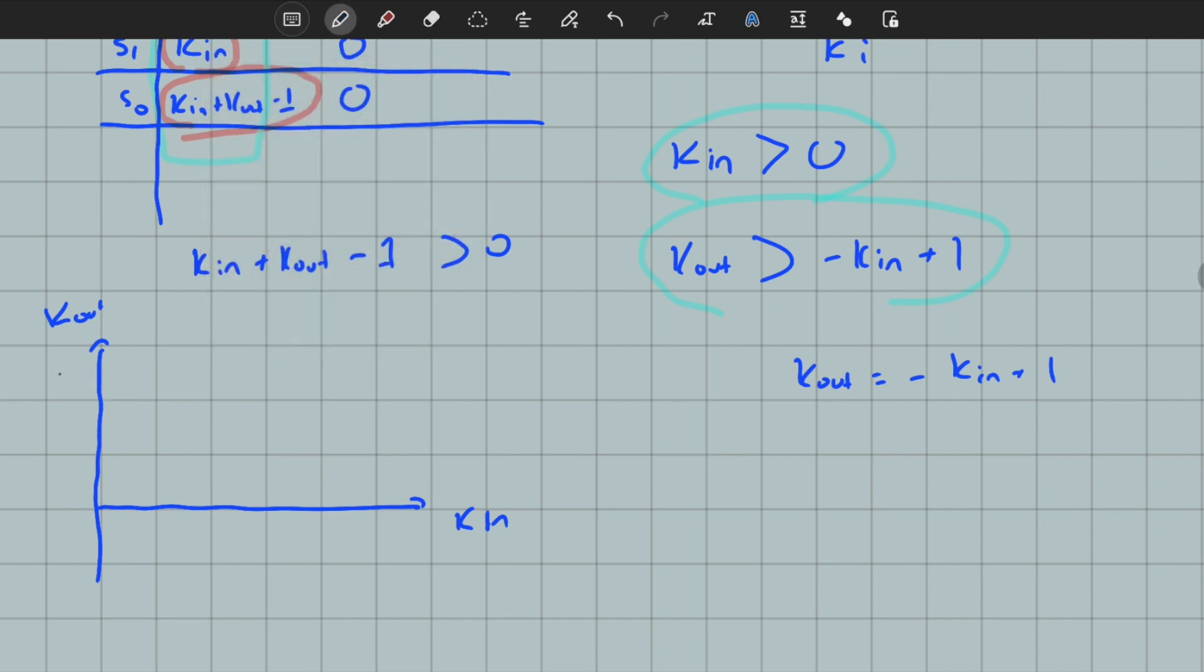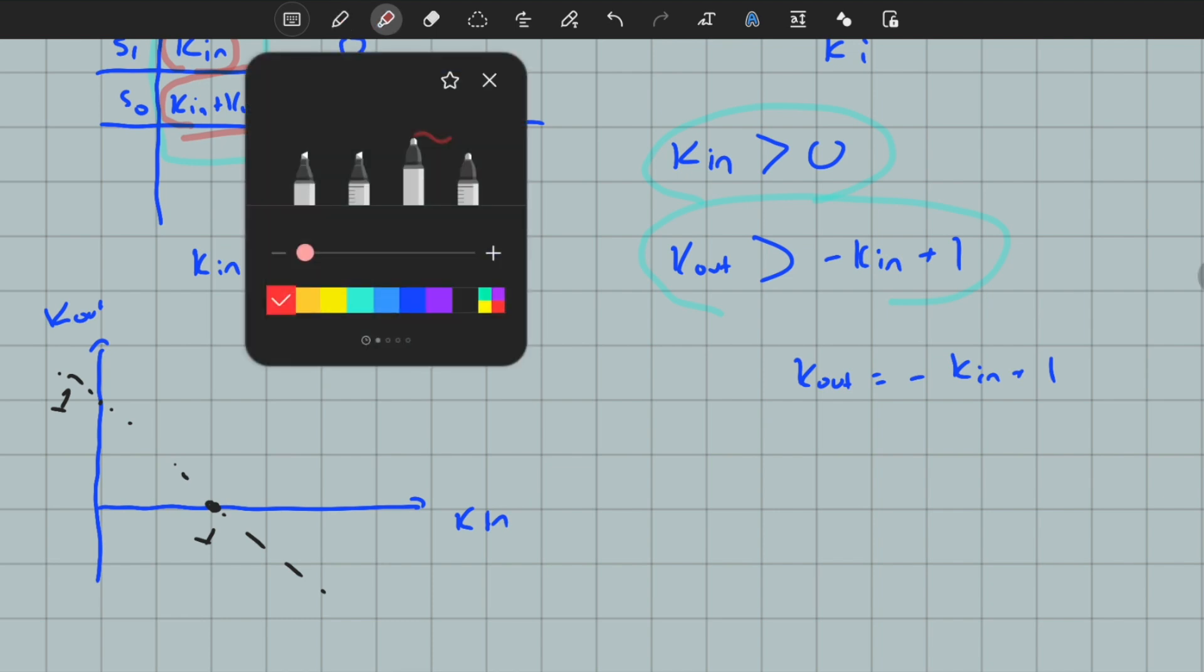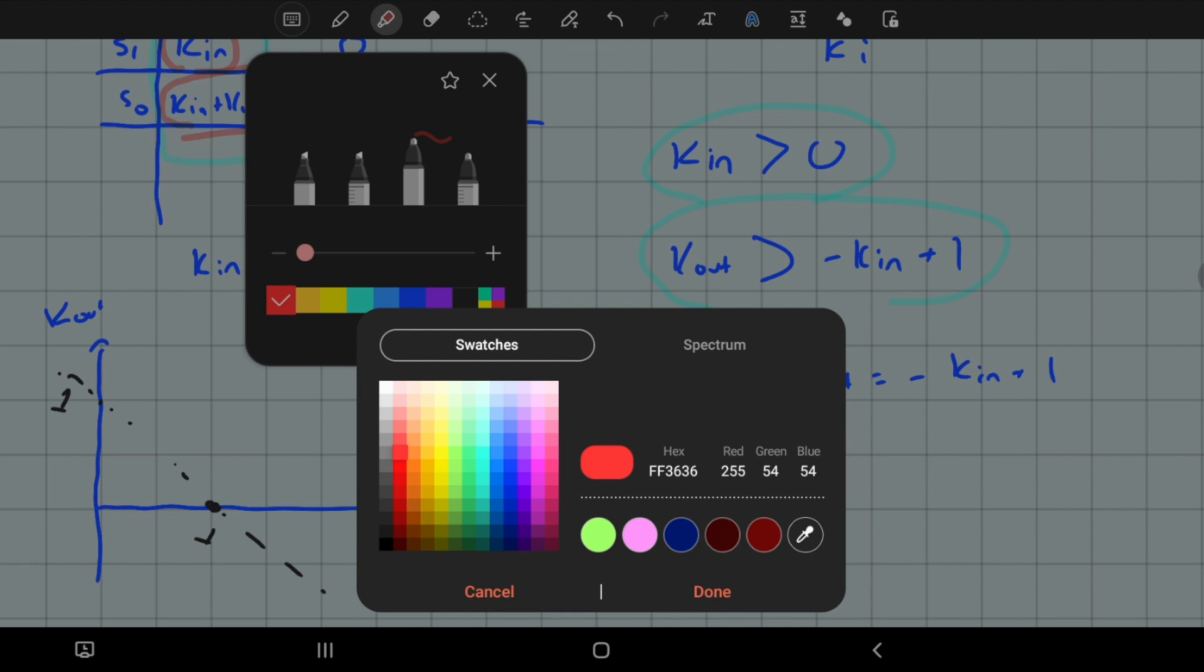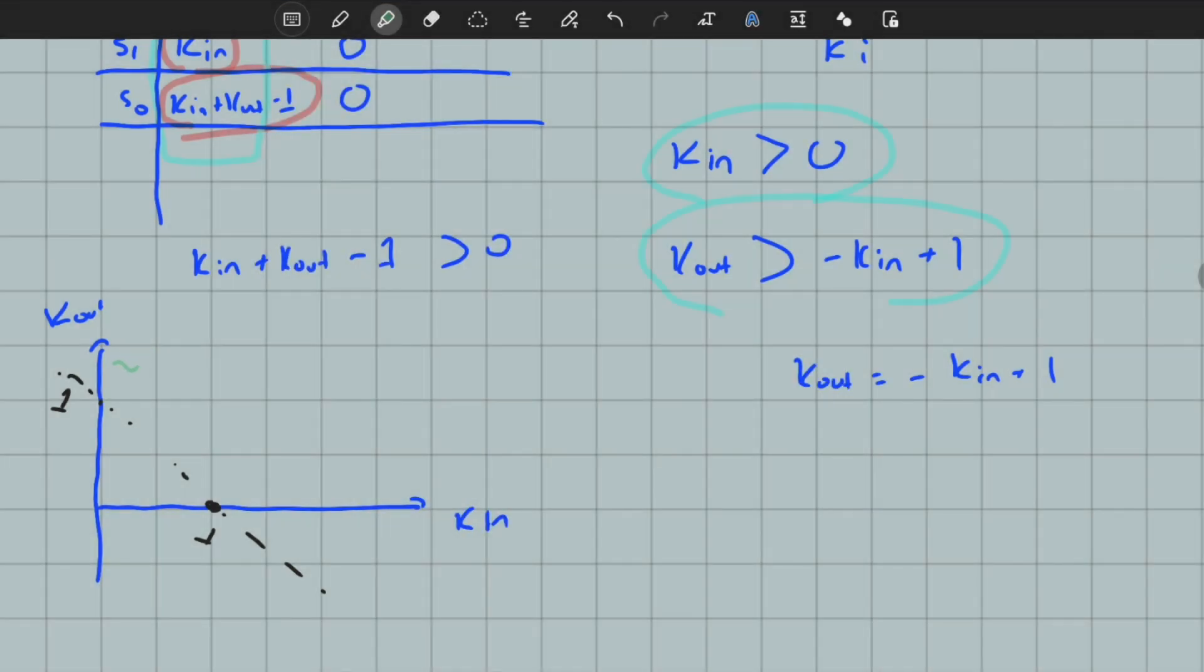k_out should be larger than minus k_in plus 1. In order to have a stable regime, the k_in and k_out values should be located in this region. As you can see, k_in has to be greater than zero - this area is not allowed. k_in has to be greater than zero, and k_out